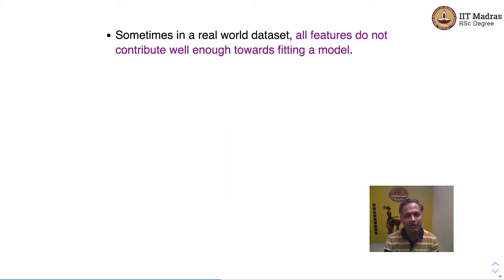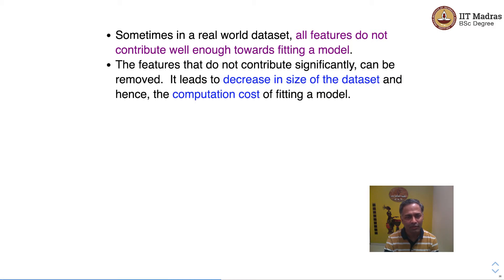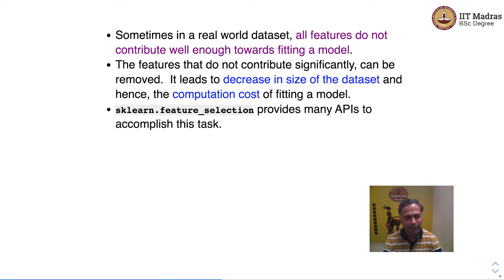Sometimes in real-world datasets, all features do not contribute well enough towards fitting a model. The features that do not contribute significantly can be removed. This leads to a decrease in the size of the dataset and hence the computational cost of fitting a model. The sklearn.feature_selection module provides many APIs to accomplish this task.